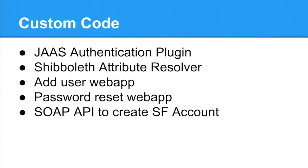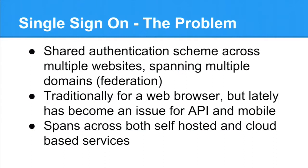We had to write a little bit of custom code. We selected Shibboleth as an identity provider. We wrote a JAS authentication plugin that takes a username and password and authenticates the user, and a Shibboleth attribute resolver that returns role-related information about the user - things like whether a particular user is an instructor, a group fitness instructor trained in Body Pump. We also needed auxiliary services: a web application to create new users and a password reset web application. And I'll also talk about a SOAP API and some Salesforce integration we did later in the project.